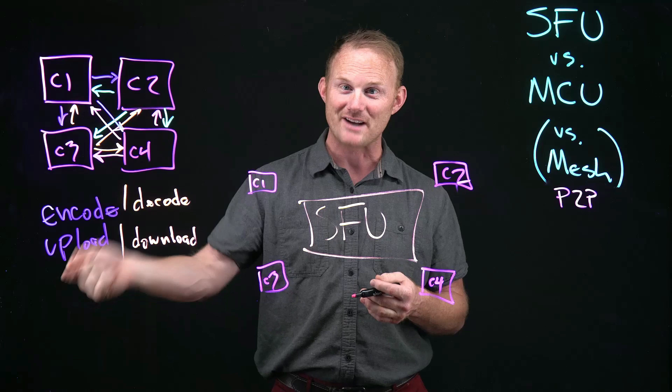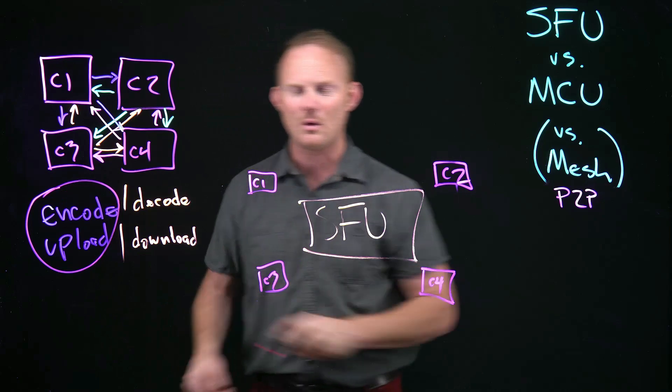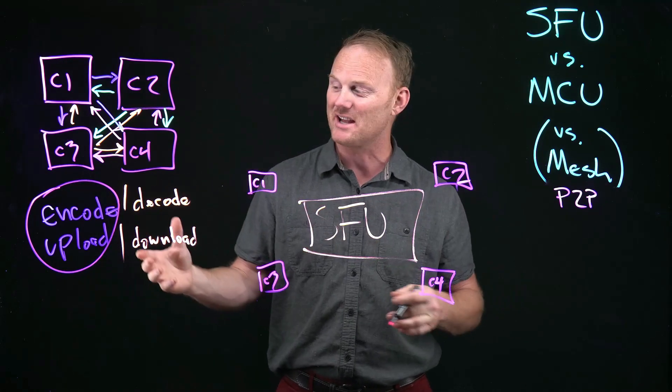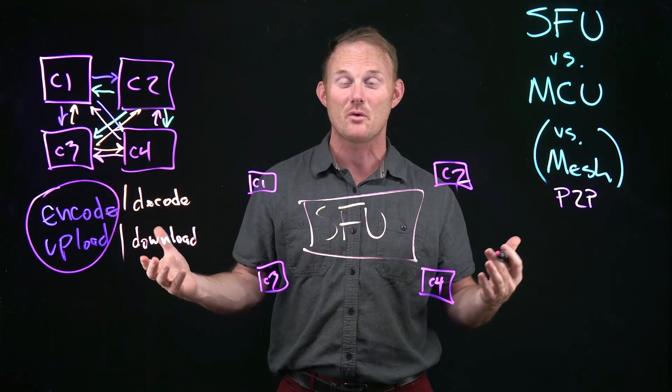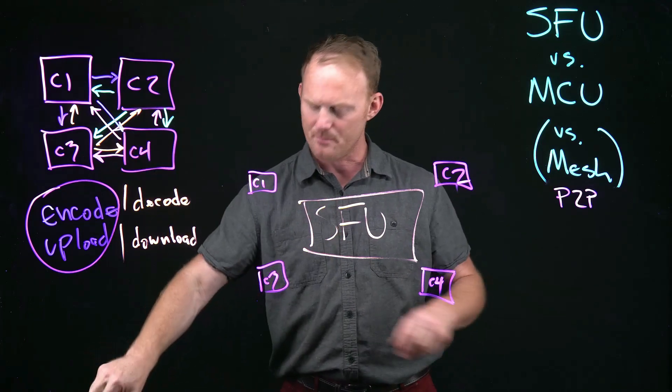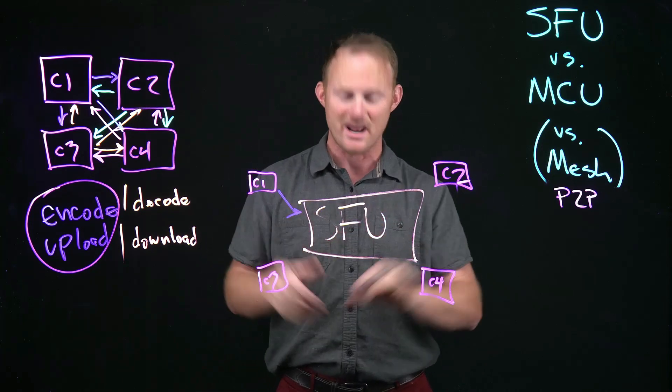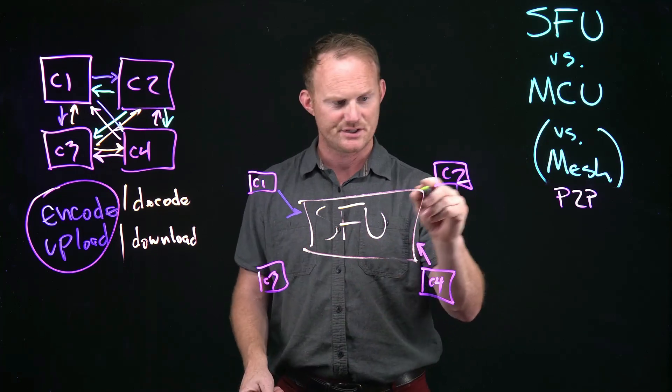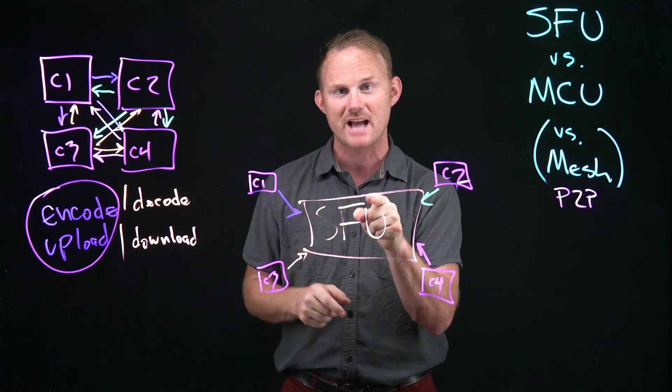In your internet connection, your speed, is your upload faster or is your download? Your download probably is, right? So the encoding and the uploading part, that is the really, really bad part. Now they're both bad if you have a thousand clients. But if we could eliminate most of the encoding and the uploading, we could suddenly scale really big. That is exactly what an SFU does. With an SFU, we've got blue up there for C1. It encodes its feed and uploads it to the SFU. That is the only upload. For C4, that's pink. It goes up there. Our C2 is green. It goes there. And C3. So everybody uploads their one feed to the SFU.